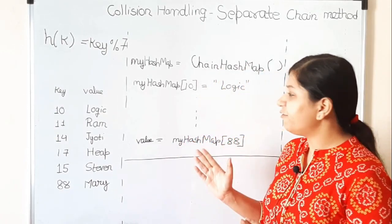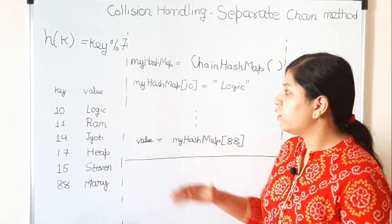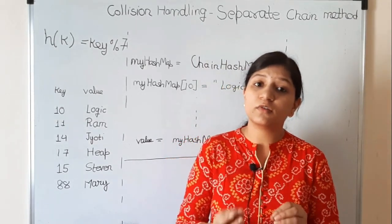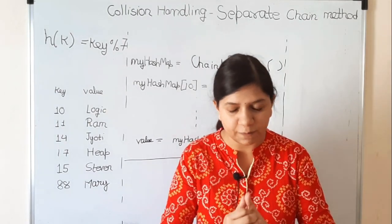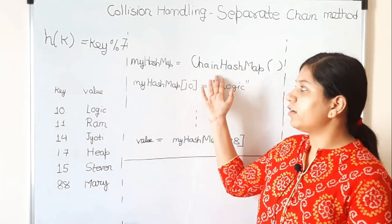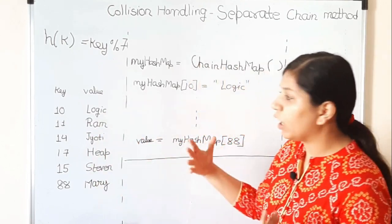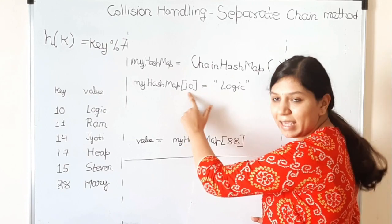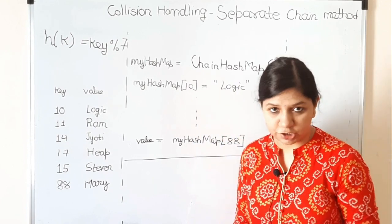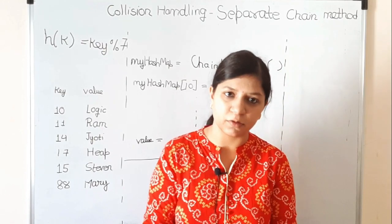First, let's see from the user's perspective what the user may need from our class. The user has some key-value pairs. One thing the user may want to do is insert new key-value pairs. Or the user gives you a key and you need to search for the value specific to it. The user will create an object of your class — let's name it ChainHashMap — and put the reference in some variable like 'my_hash_map'. The user may want to set values using the index operator, like my_hash_map[key] = value.